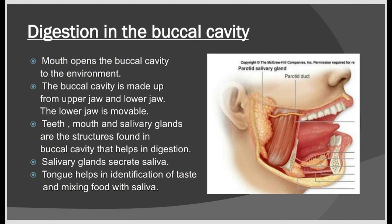The digestive system commences from the buccal cavity. The mouth opens the buccal cavity to the environment. The buccal cavity is made up of the upper jaw and lower jaw, and only the lower jaw is movable. Teeth, tongue, and salivary glands are the structures found in the buccal cavity that help in digestion. Salivary glands secrete saliva, and the tongue helps in identification of taste and mixing food with saliva.